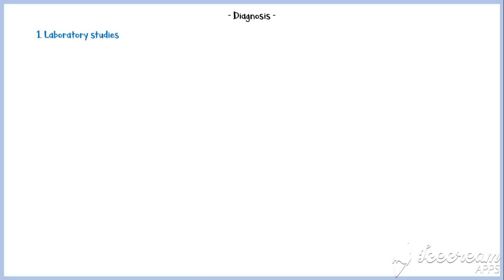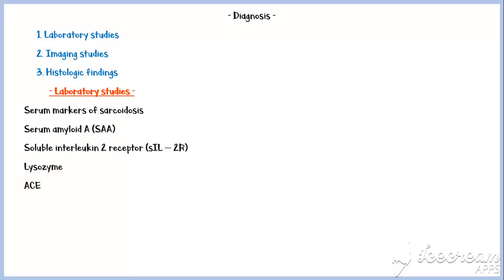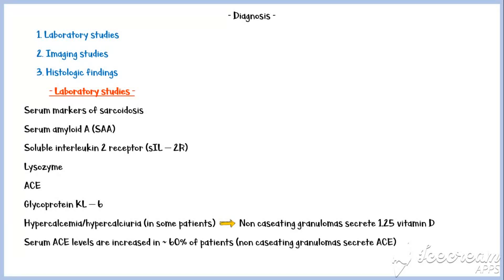Now let's discuss the diagnosis of sarcoidosis. Useful methods include laboratory studies, imaging studies, and histologic findings. Laboratory studies are mainly based on serum markers of sarcoidosis, including serum amyloid A, soluble interleukin receptor, lysozyme, angiotensin converting enzyme, and glycoprotein KL-6. Hypercalcemia or hypercalciuria is seen in some patients because non-caseating granulomas secrete 1,25-dihydroxyvitamin D. Serum ACE level is increased in about 60% of patients because non-caseating granulomas secrete ACE, which may function as a cytokine.